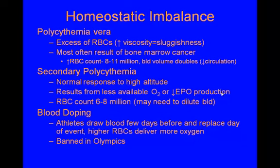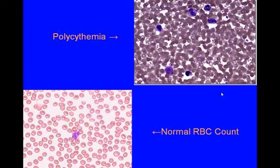EPO stands for erythropoietin, the hormone that stimulates red blood cell production. If erythropoietin levels are low, that's not normal — you need to investigate further. The kidneys produce erythropoietin, so you'd want to check for kidney failure as the cause. Blood doping is where athletes draw their blood a few days before an event and replace it the day of — higher red blood cells deliver more oxygen, meaning more ATP, so they can run faster, go longer, and jump higher. This is banned in the Olympics, but legal in sports like boxing and baseball.